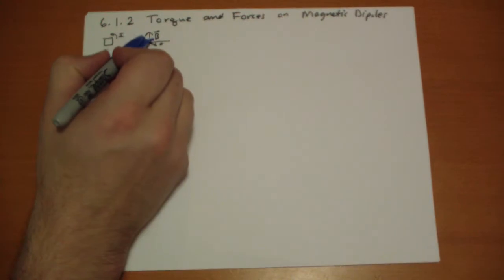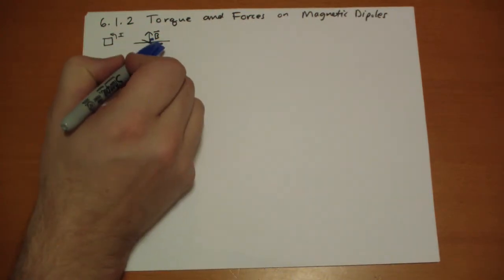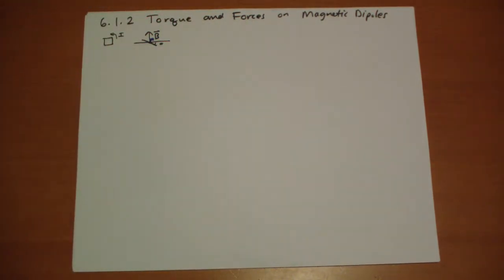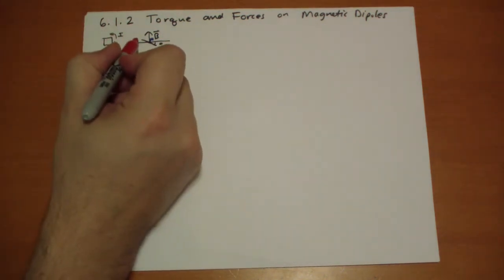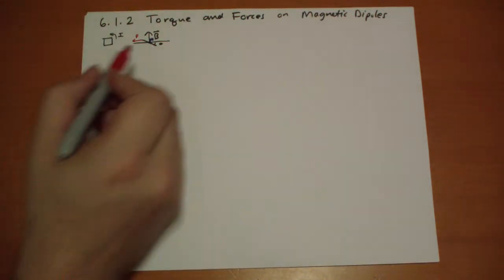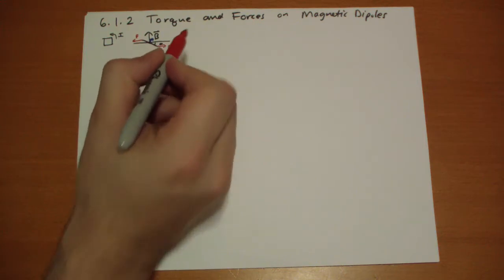The force on the current that's above here and down here, going into and out of the page, so when it comes out of the page, QV cross B, so you get a force pointing to the right. So we get a little force pointing this way. And then down here, we get a force pointing that way.